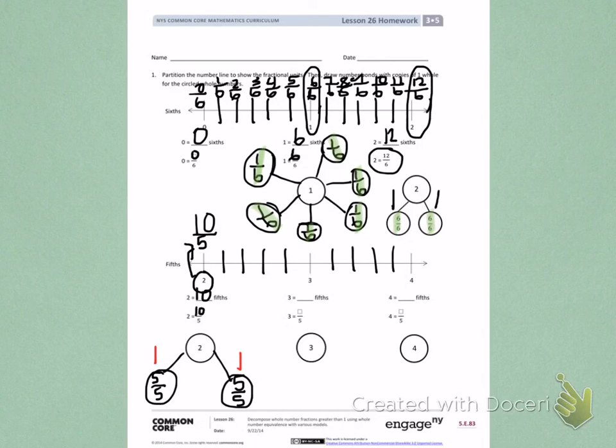Finish the rest of the number line by labeling each fraction and then filling in how many fifths equals 3, how many fifths you need to equal 4, and completing each number bond.